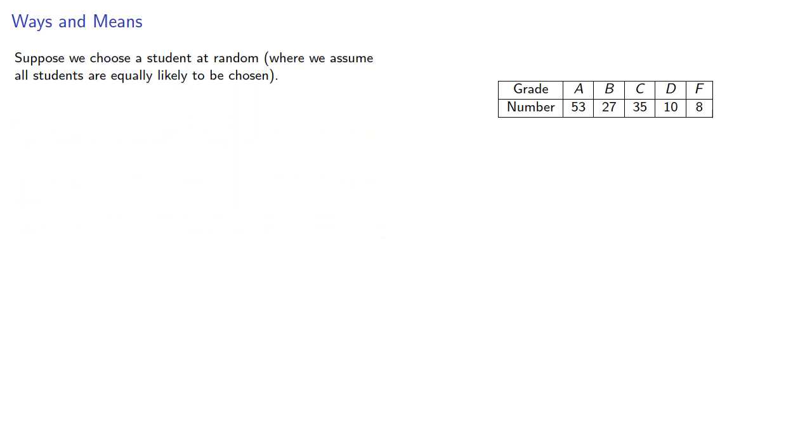Now let's consider a different situation. Suppose we choose a student at random where we assume that all students are equally likely to be chosen. The probability they get an A, B, C, D, or F... Well, we have the data value so we can compute these empirical probabilities.